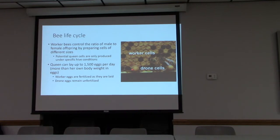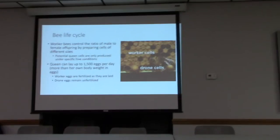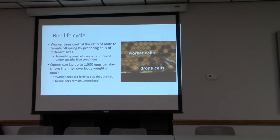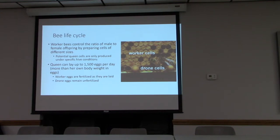Worker cells are the standard cells; drone cells are larger — they look like little .22 cartridges. Drone cells are typically found around the outer edges of the frame. The only time I've found drone cells interspersed with worker cells is when the queen is failing or there's a laying worker. The queen can lay up to 1,500 eggs per day — more than her own body weight.